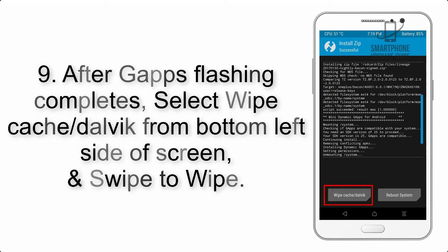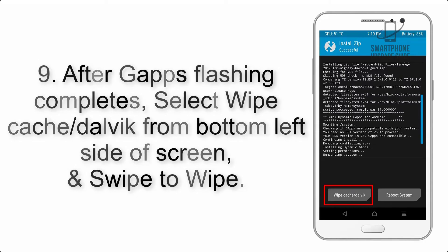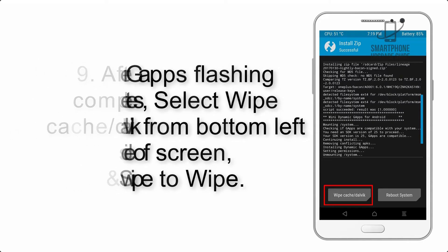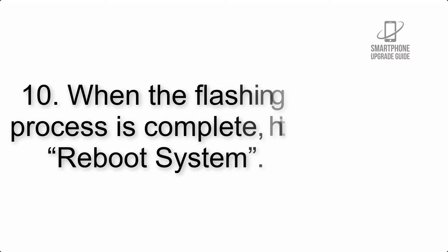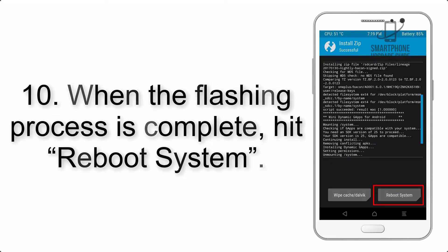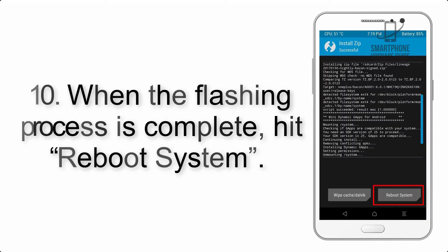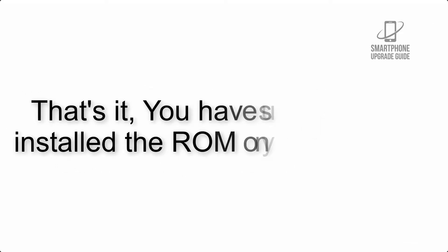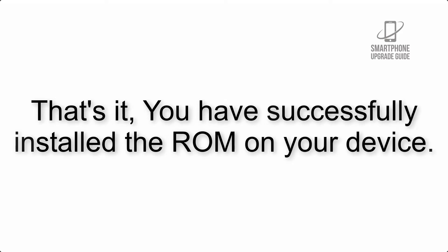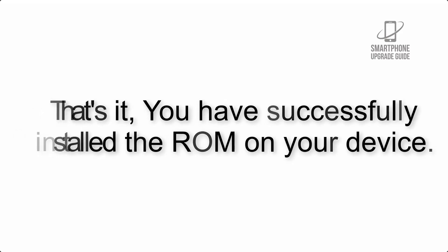Step 9: after G apps flashing completes, select wipe cache and Dalvik from the bottom left side of the screen and swipe to wipe. Step 10: when the flashing process is complete, hit reboot system. That's it — you have successfully installed the ROM on your device.